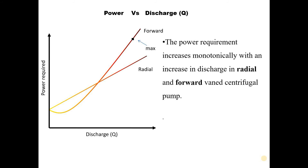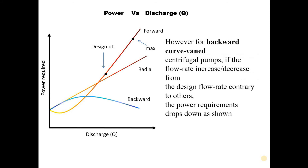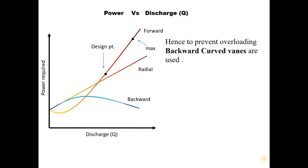On the other hand, if the pump is rated at the design point and the operating flow rate exceeds it, the power required will shoot up, causing overloading. However, for backward curved vane pumps, if the flow rate increases or decreases from the design flow rate, contrary to the others, the power requirement drops down. Hence, the vanes are curved backwards to prevent overloading of the impeller motor.